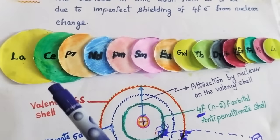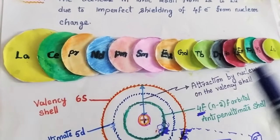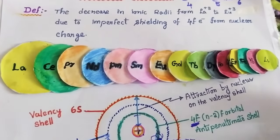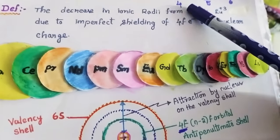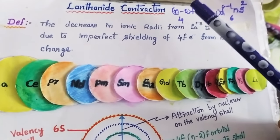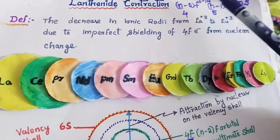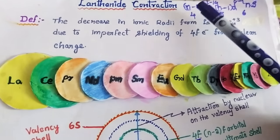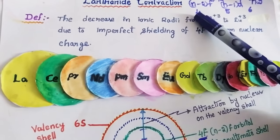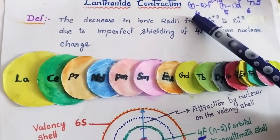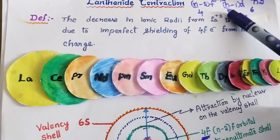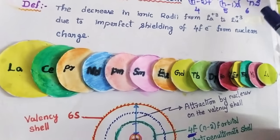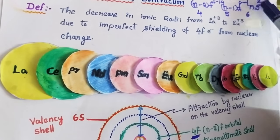Let's see what is the reason for the contraction of the lanthanides. The general electronic configuration is: (n-2)f¹⁻¹⁴ (n-1)d⁰⁻¹ ns². Since lanthanides correspond to the sixth period, substitute n=6: giving 4f¹⁻¹⁴ 5d⁰⁻¹ 6s².